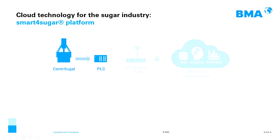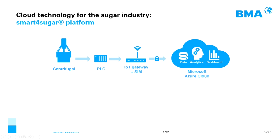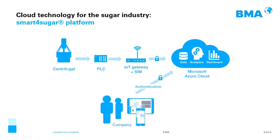What we have done is added an IIoT gateway which collects the process data from the PLC and sends them to the Microsoft Azure Cloud. The data are stored there, analyzed, and prepared for dashboards. Employees from a company have access to that cloud and can see the dashboards on their devices — either on mobile devices like smartphones or tablets, or by PC or laptop. They need to authenticate themselves according to the company's authorization. A company administrator authorizes the users to access the cloud.